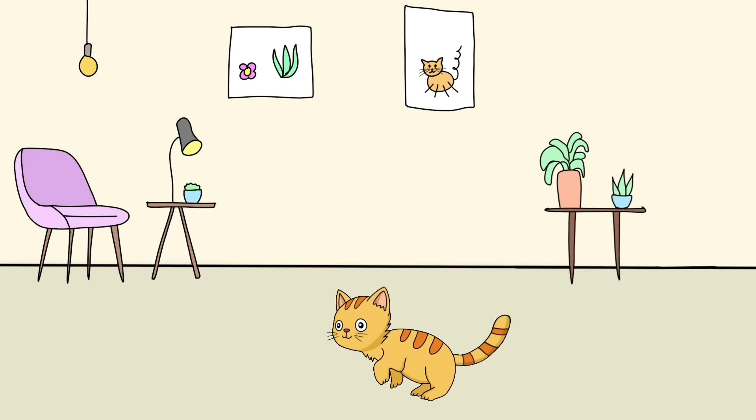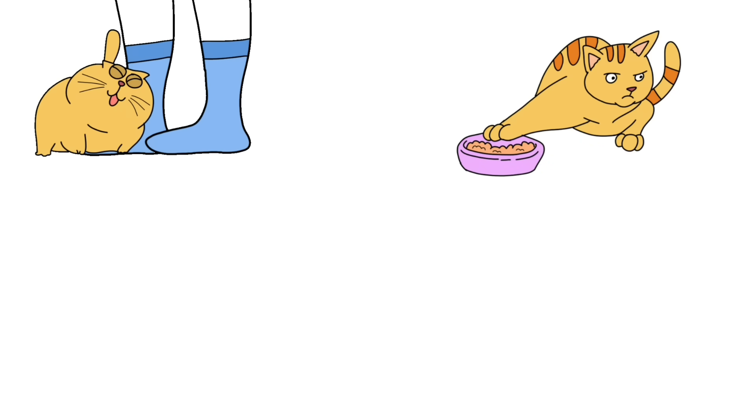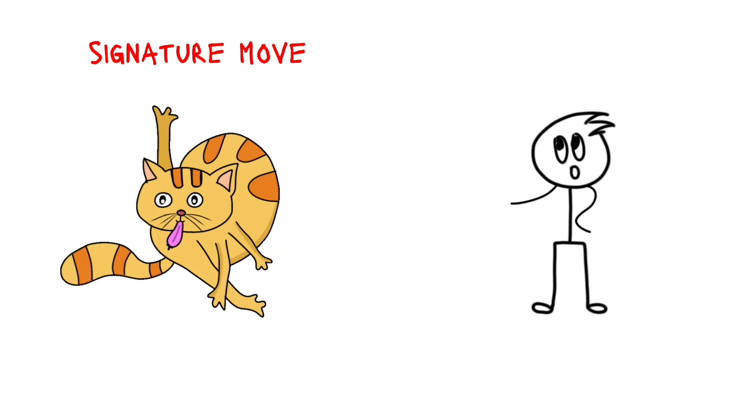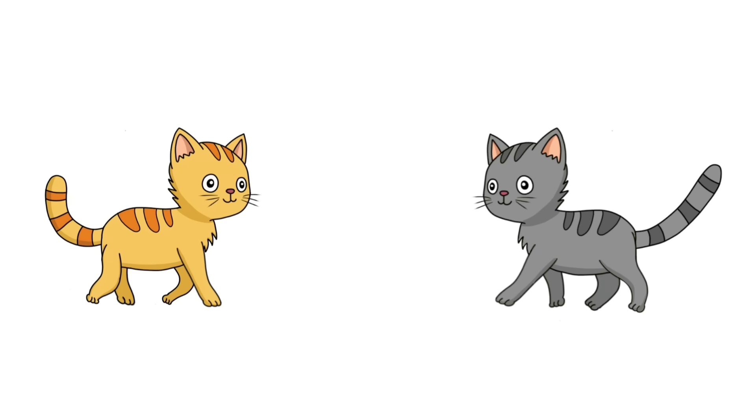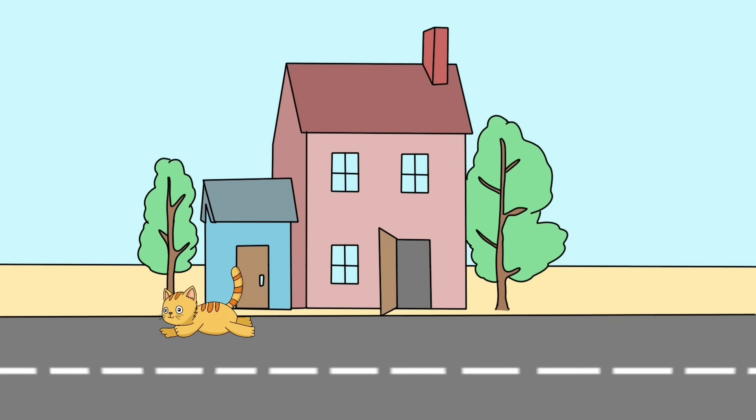When a female cat gets in mood, she becomes restless and makes a howling sound. She shows a lot of affection, doesn't eat much, raises the butt kinda like this, sprays urine everywhere, and does the signature move, licking. If your cat does this, it means she needs a date. So, get her one. If not, she will run away from home in search of mail.